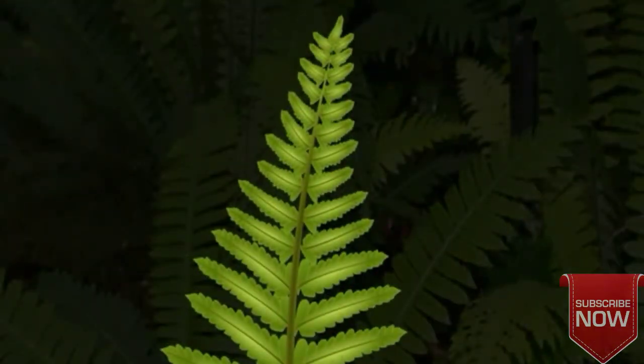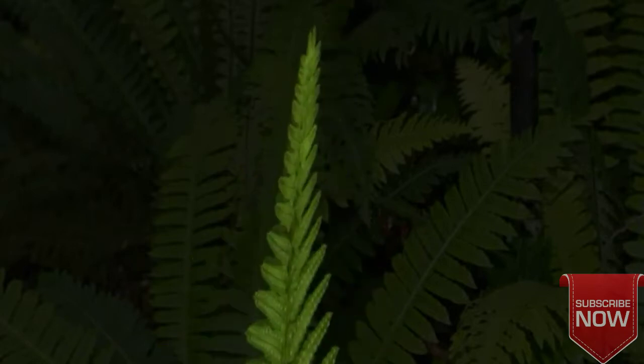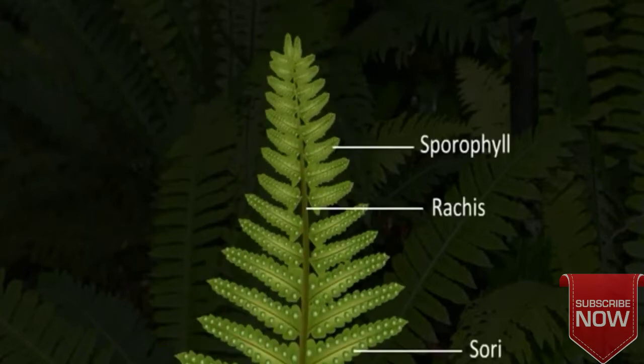...and look like a branch, hence named as Frond. Each leaf has a short stalk called Petiole. The pinnae develop on the main stalk called rachis, which is the continuation of the Petiole.